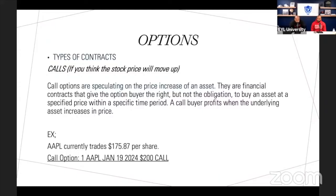A call buyer profits when the underlying asset increases in price. Apple is our example. Apple is currently at $175 per share today. If I believe it's going to go up — and the majority of you said yes, by January 2024 it can make it to $200 — then I'm making a call, because I'm saying the price of Apple will appreciate in that given time. As it appreciates from $175, if I bought that call today, I'm going to make money all the way up until it hits $200, and even more if it passes $200. We're investing in solid companies with appreciation, growth, and strong fundamentals.